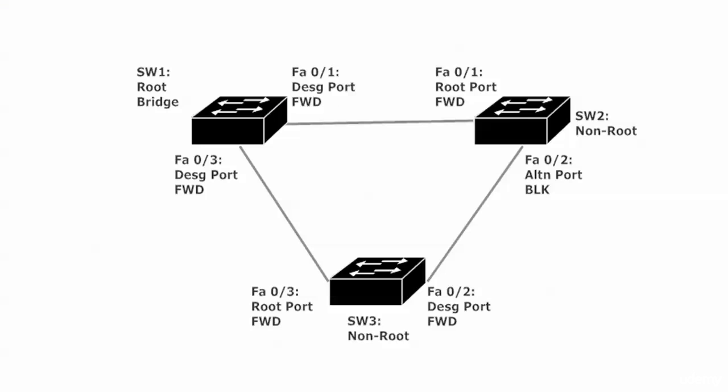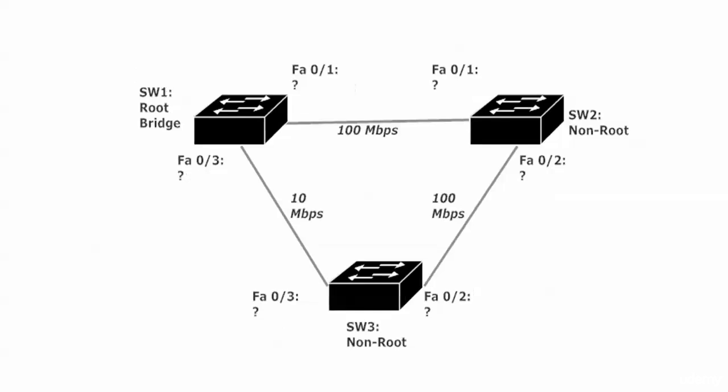STP puts only one port into blocking mode out of those six, and that's enough to prevent switching loops. If I asked you what's the root port on switch three, your eyes would say the port directly connected to the root, because you can't get any shorter than that. But maybe you can, if the speeds change a little bit. I'm not saying they'd trick you on the exam, but you don't want to get used to seeing the same speed on every link.